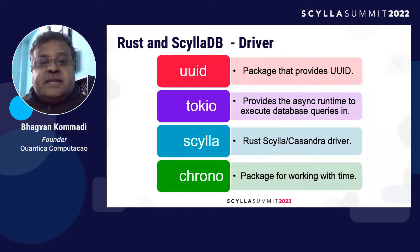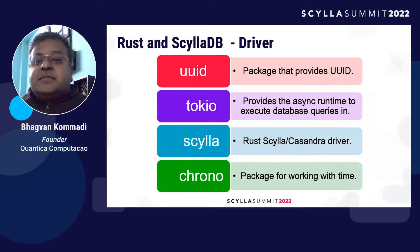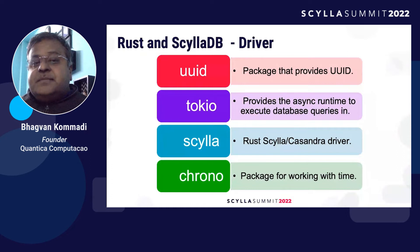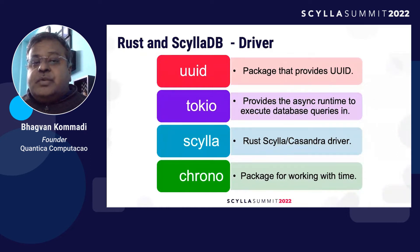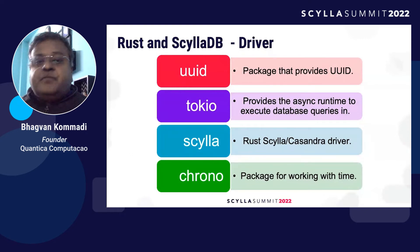Now, specific to ScyllaDB: to access a database you need a driver, and similarly you have a Rust driver. The UUID package provides UUID identifiers so you can have unique IDs created. Tokio provides the async runtime to execute database queries. Scylla has the Scylla or Cassandra driver specific to the Rust language. And the Chrono package is for working with time — especially when doing queries you want to know how long they take, with start time and end time.